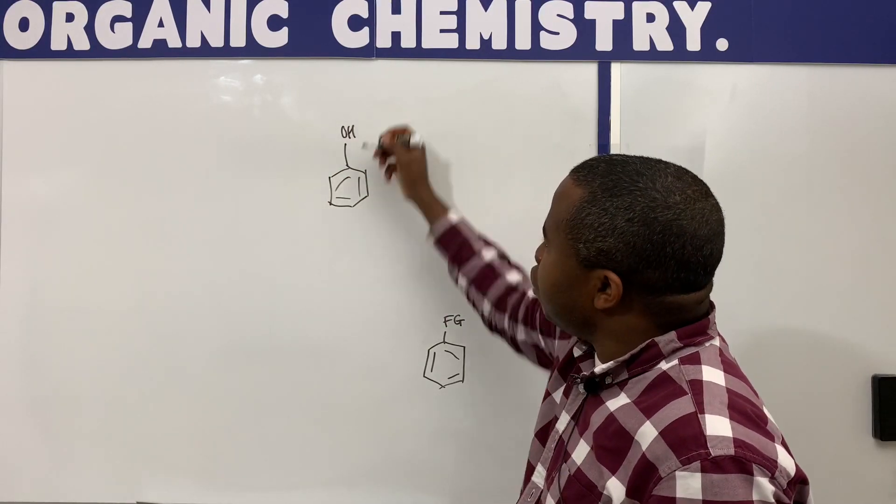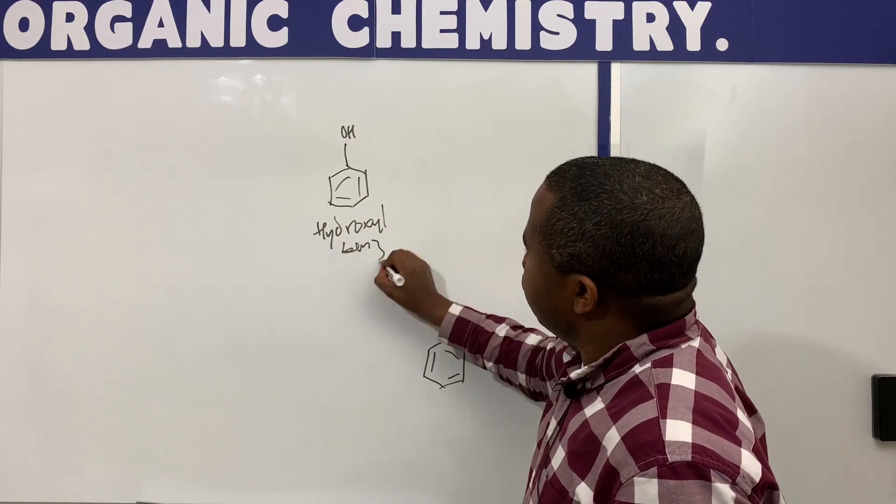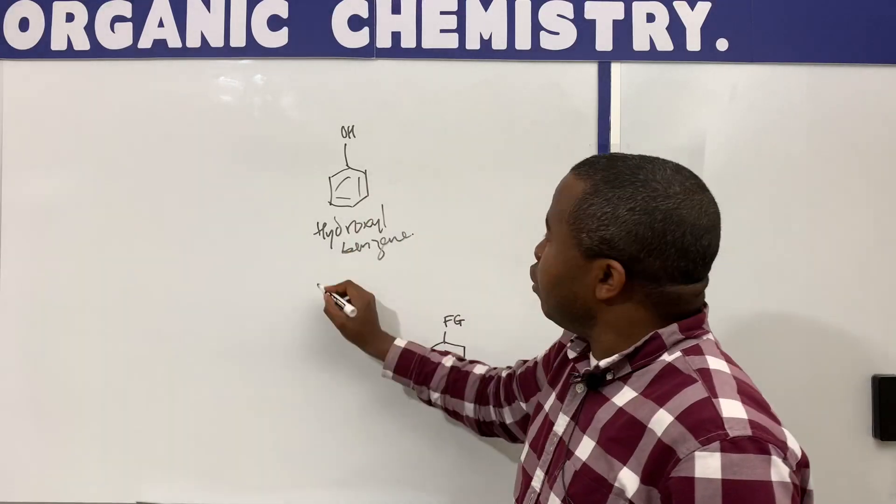So in this case, we have a hydroxyl group, so this becomes hydroxyl benzene, and the trivial name for this is phenol.